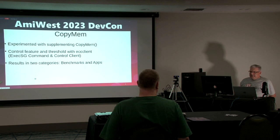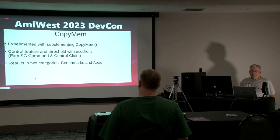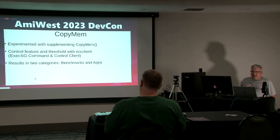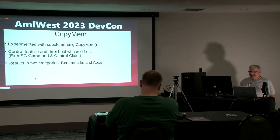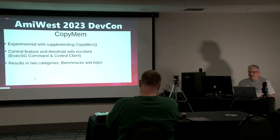We added some commands to the new ExecSG command and control client — execsg — which is a way to modify kernel behavior at runtime. You can send commands to the kernel and modify behavior, and one of the commands is to do DMA copies: turn it on or off, change the threshold. So we had beta testers and some developers test it and got some benchmarks, and I just wanted to quickly show you the results.